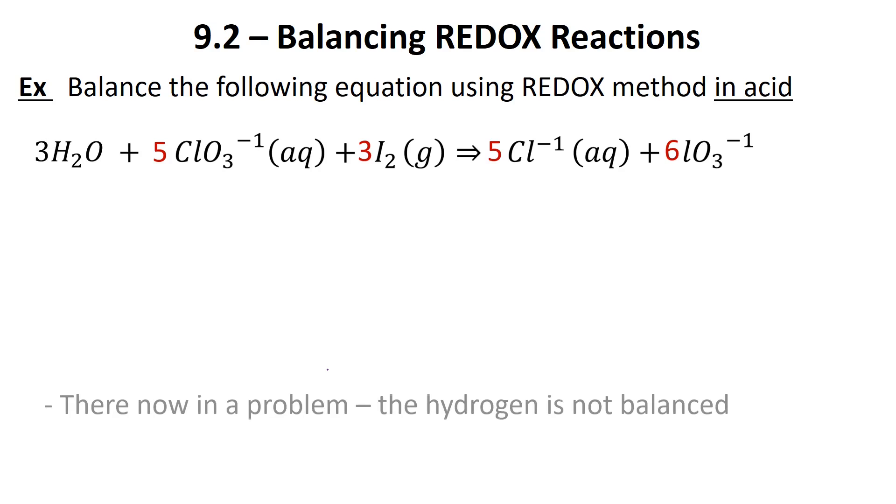We're going to add in our three oxygens. But now we've got another problem. The hydrogen is not balanced because we have six hydrogens on this side and none on our product side. Because this is done in acid, we need to remember that we're now going to deal with the H+ molecule. If we need six hydrogens on the right, we are simply going to place six H+ on the right side.